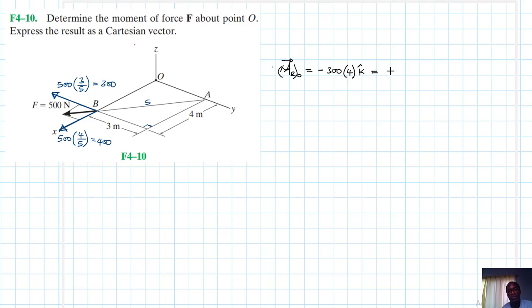So this just becomes equal to minus 1200, and then we have the units which are Newton meters.